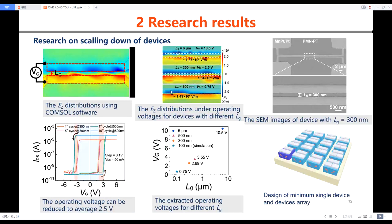Next, we investigate the scaling down of our device. Through simulation analysis, we found that the operating voltage can be effectively reduced by reducing the gap length LG. Interestingly, sub-1 volt operating voltage can be obtained with LG reduced to 100 nm.